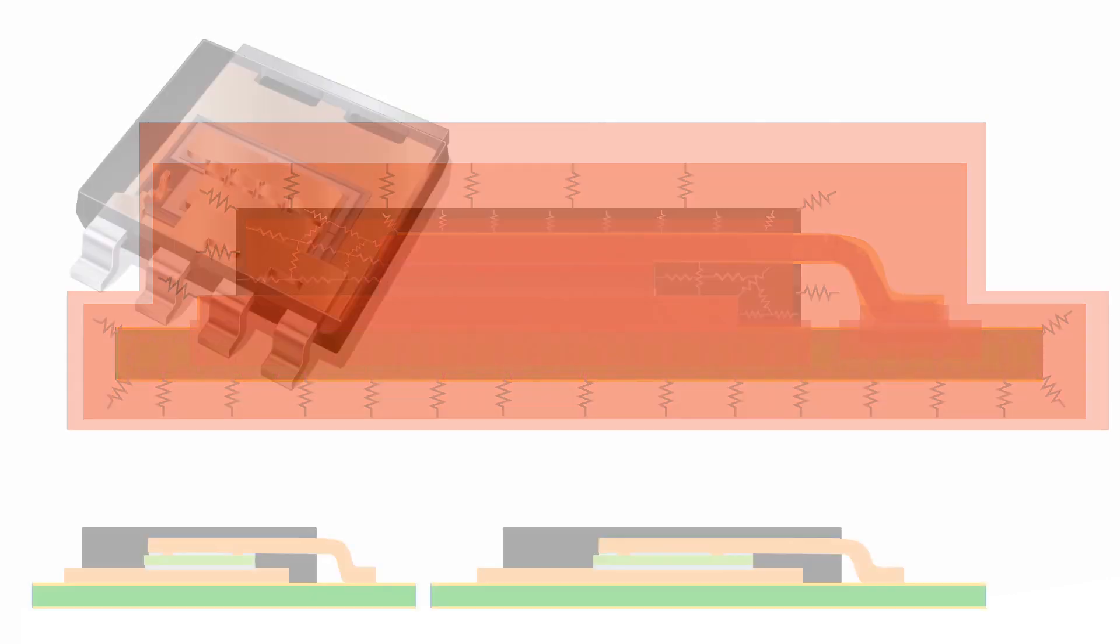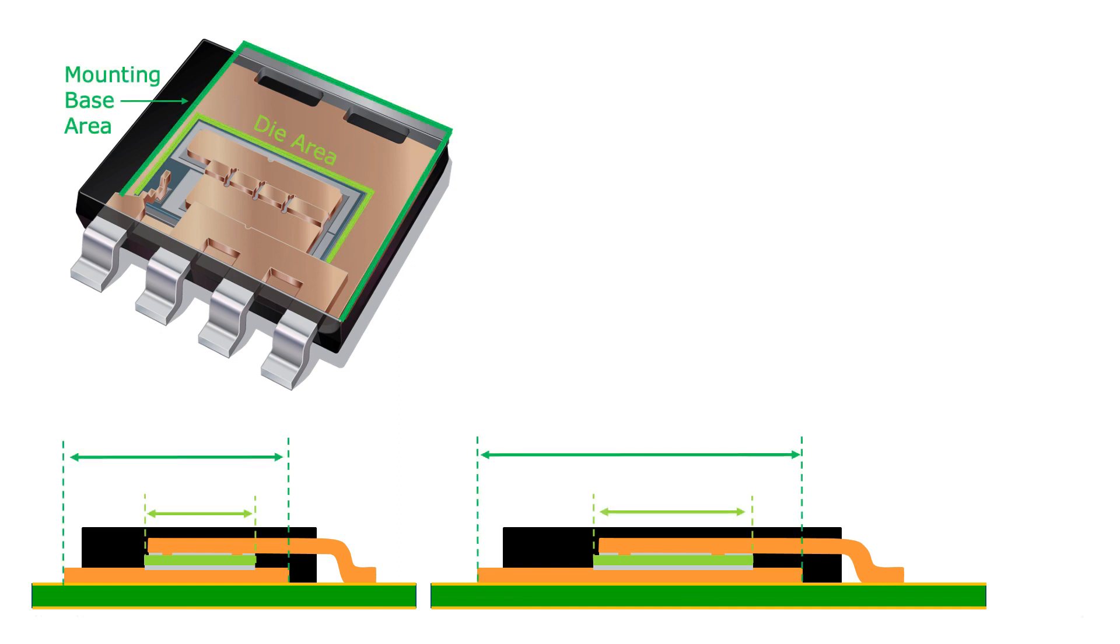Some factors that affect this thermal resistance are the die and mounting base area. The larger those areas, the smaller the RTA Junction to Ambient gets.